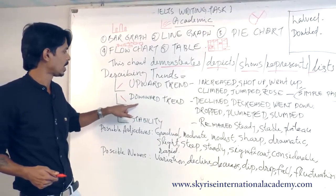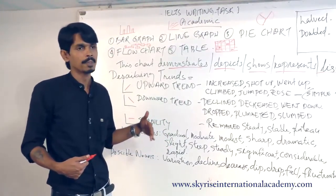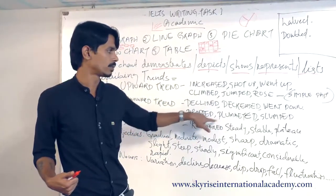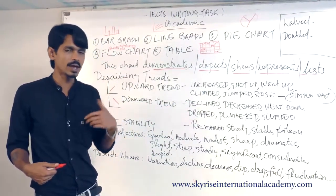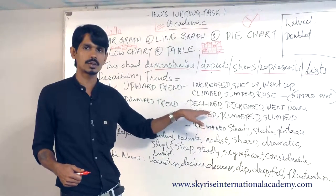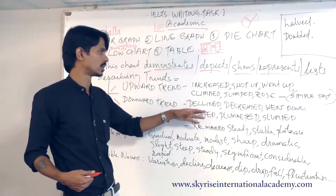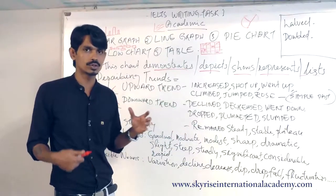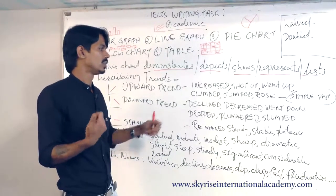You will also be required to describe a downward trend — a decreasing trend. For that you can use: declined, decreased, went down, dropped, plummeted, or slumped. These are all alternatives for 'decrease.' The reason I'm giving all these words together is that you may need to use similar types of words several times in the essay, so instead of using 'declined' every time, you can substitute with 'decreased,' 'went down,' or any of these variants. It is always good to have vocabulary that you can substitute for a single word.